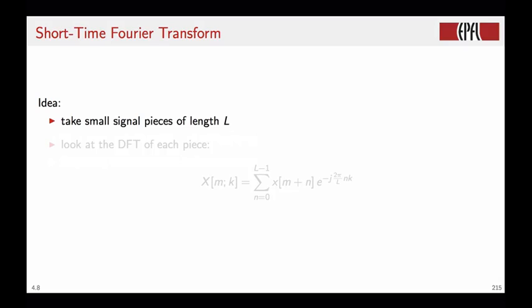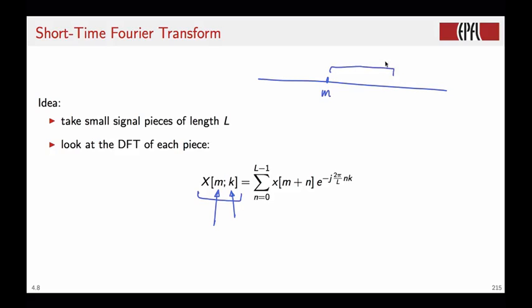So the idea behind the short time Fourier transform is the following. Instead of looking at the DFT of the whole signal in one go, we take small pieces of length capital L, and we look at the DFT of each piece. So the DFT coefficients now are indexed by two variables. M is the starting point for the localized DFT, and K is the DFT index for that chunk.